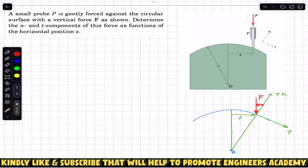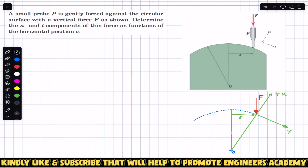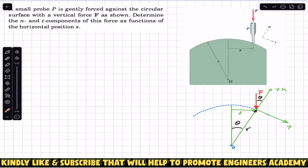Now let's say this force F is making an angle theta with the normal axis. Since we want to find the components of force F along n and t, we must find the angle of this force F with either the n or t axis. This force is vertical, and that same angle theta appears here as well, so this angle is also theta.